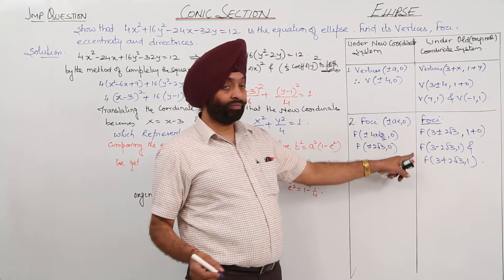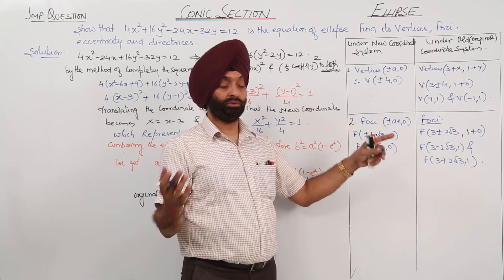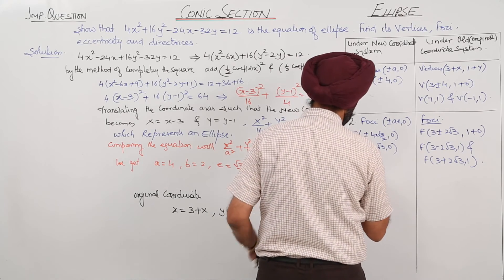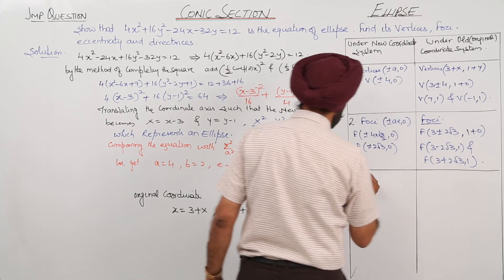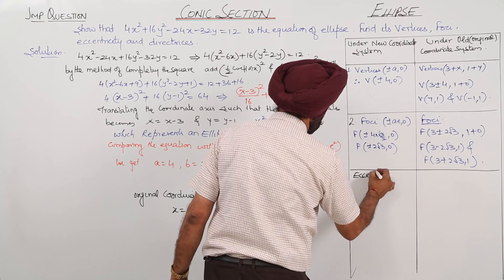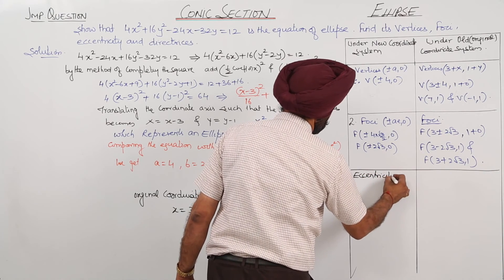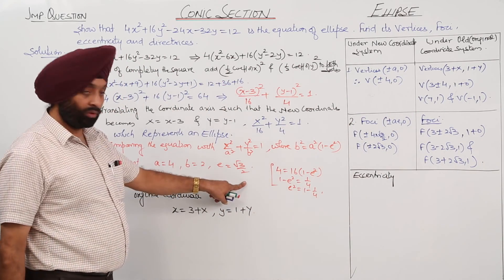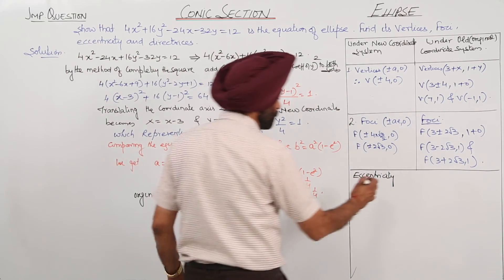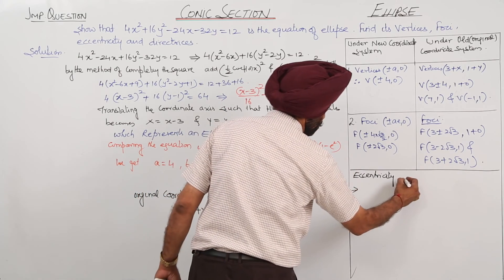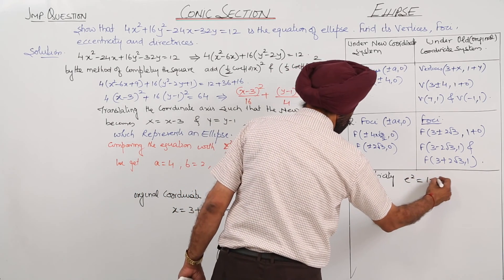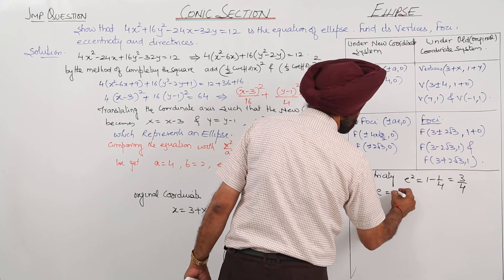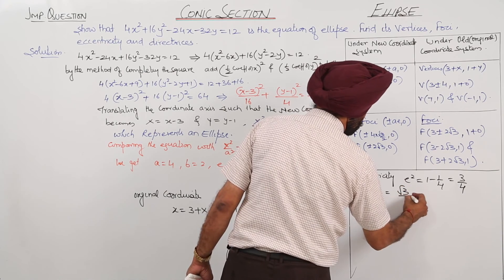These can be labelled S₁ and S₂. Number 3: eccentricity. From b² = a²(1 − e²), e² = 1 − 1/4 = 3/4, so e = √3/2.